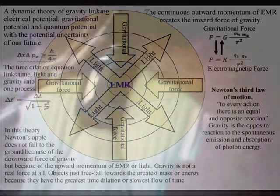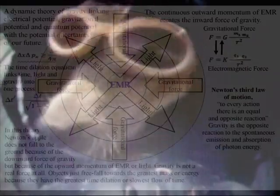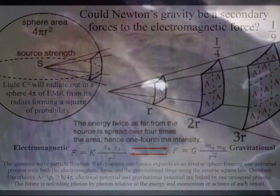The outward momentum of photon energy forms the inward force of gravity as a process of continuous creation. This can be seen mathematically with both electromagnetic fields and gravitational fields sharing the inverse square law, representing one geometrical process.